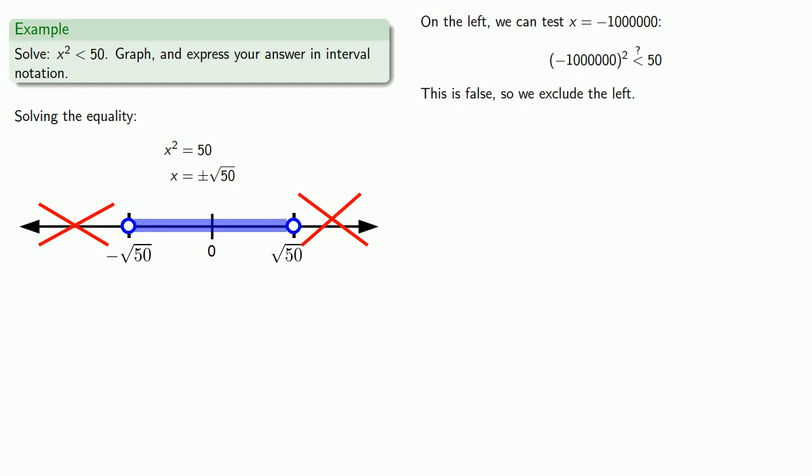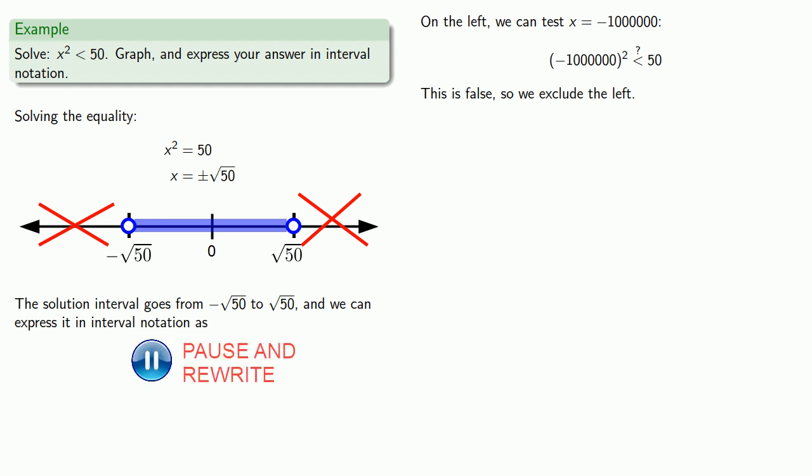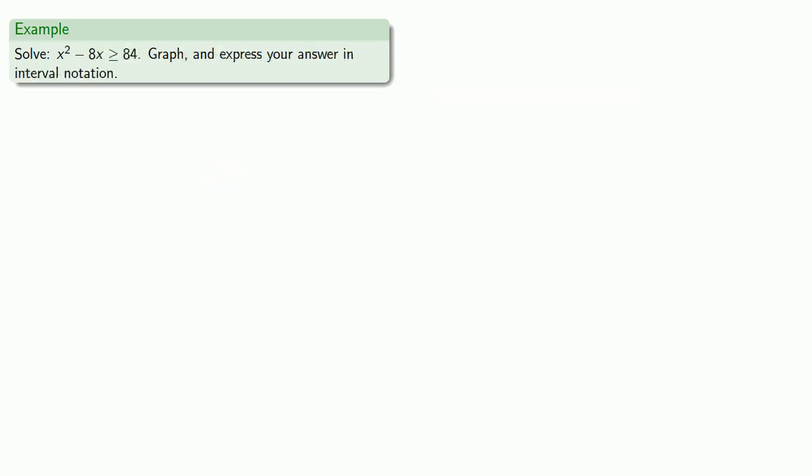Since we have the graph of our solution, it's easy enough to convert that into our solution in interval notation. The solution interval goes from negative root 50 to positive root 50.